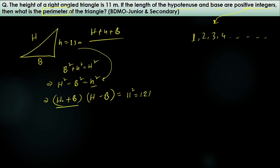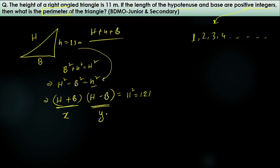Now we have two quantities: (H + b) and (H − b), whose product is 121. Since H and b are positive integers, both their sum and difference are integers. Let's call x = H + b and y = H − b, so x · y = 121.